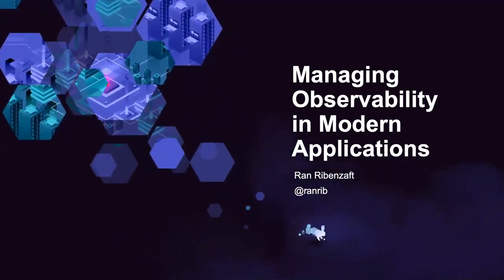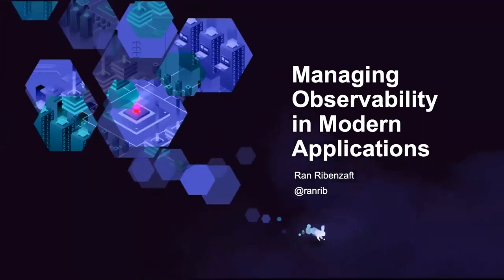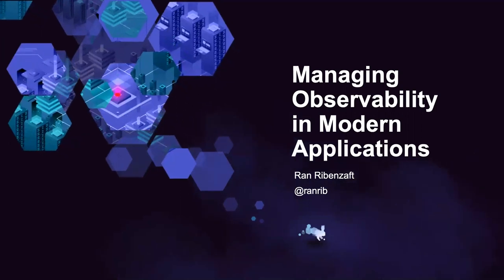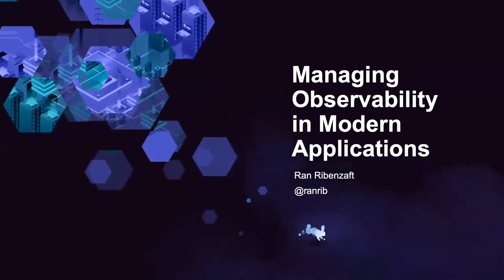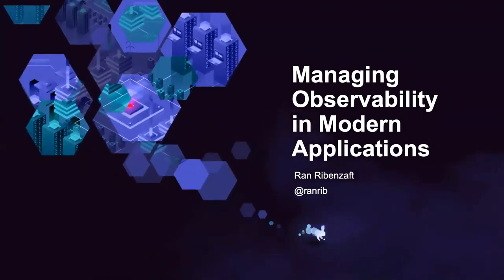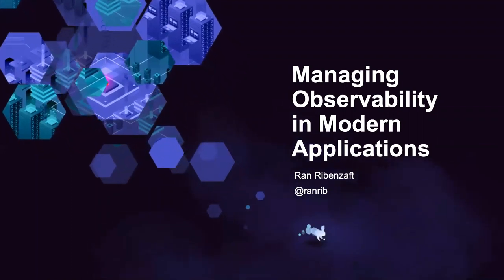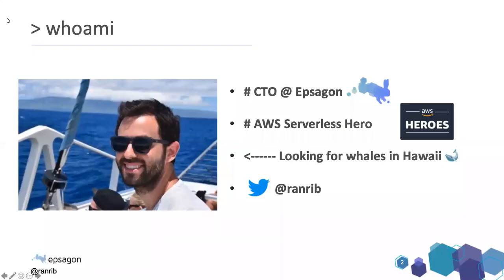Thank you very much for that intro. Thank you everyone for joining — I really appreciate it. I'm going to talk today about managing observability. Just a few words about myself: currently I'm the CTO at Epsilon and also one of the co-founders. I'm also an AWS serverless hero, which means I can say a lot about serverless. In this image you can see me looking for whales in Hawaii — unfortunately I couldn't find any. You're more than welcome to follow me on Twitter where I talk about serverless, cloud native, and things like that.